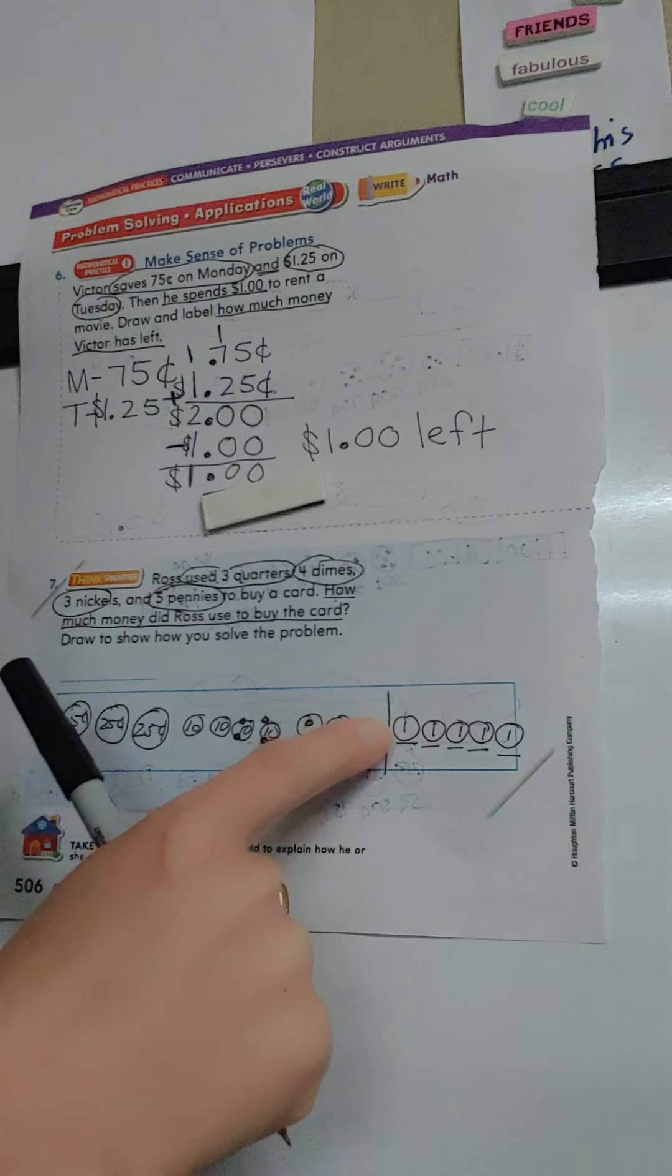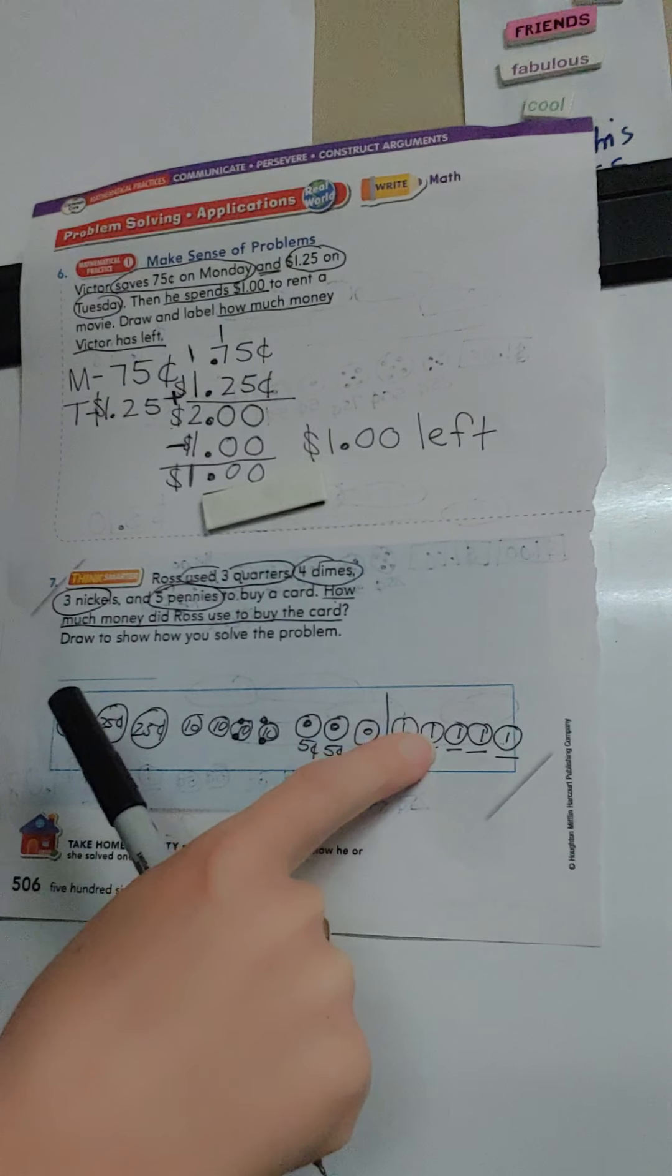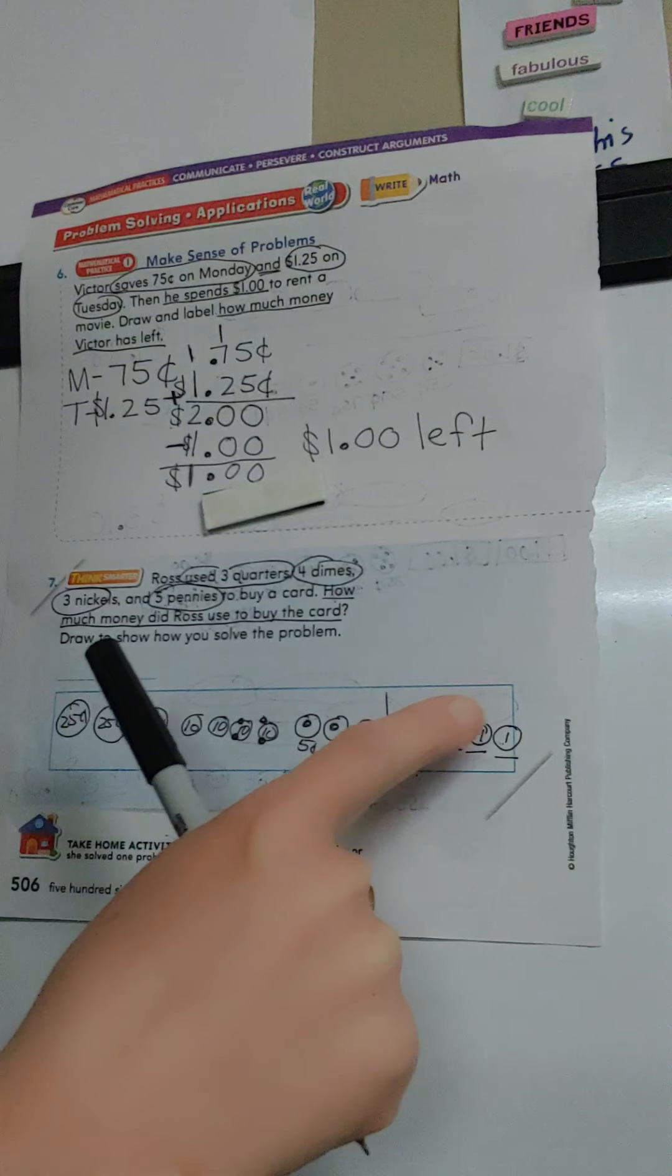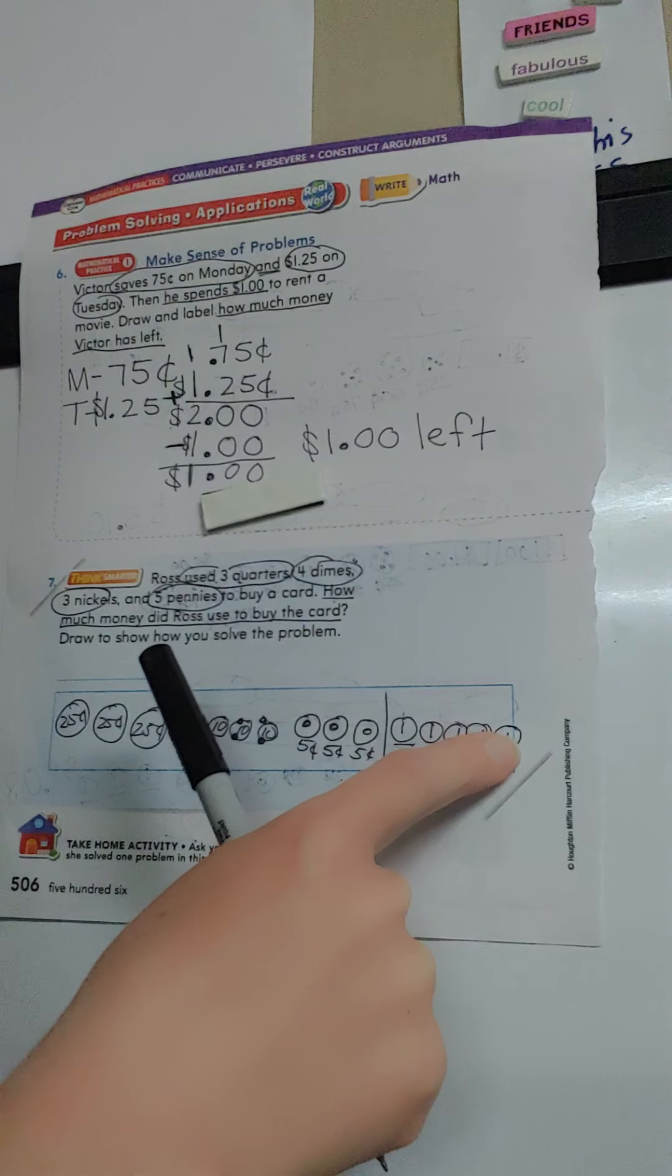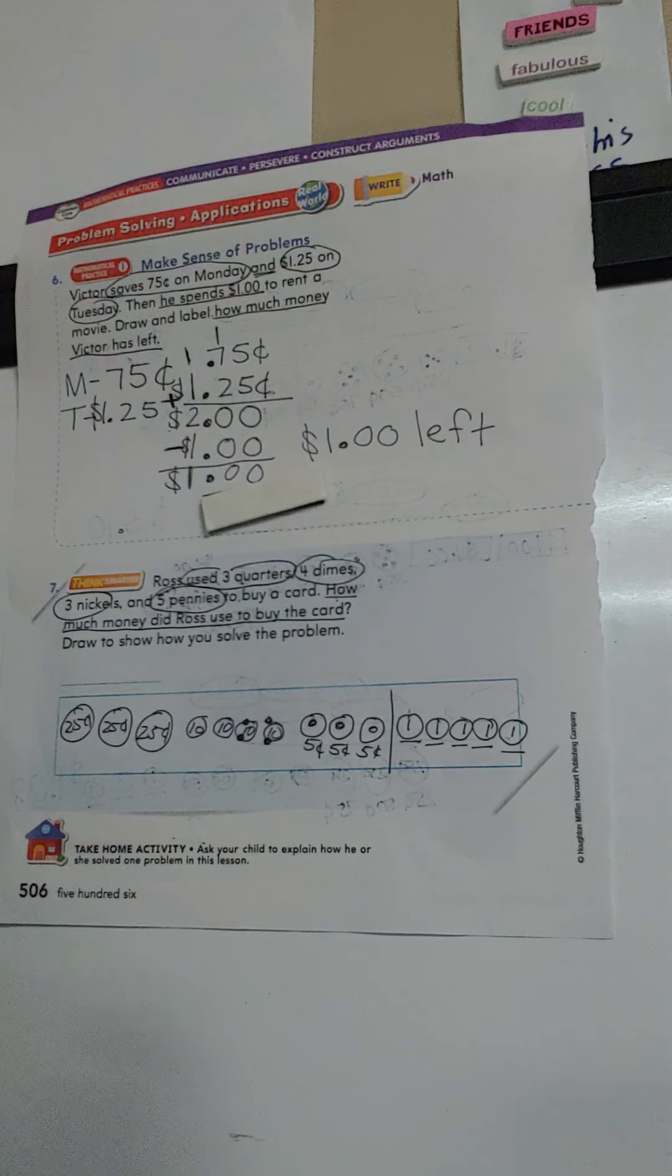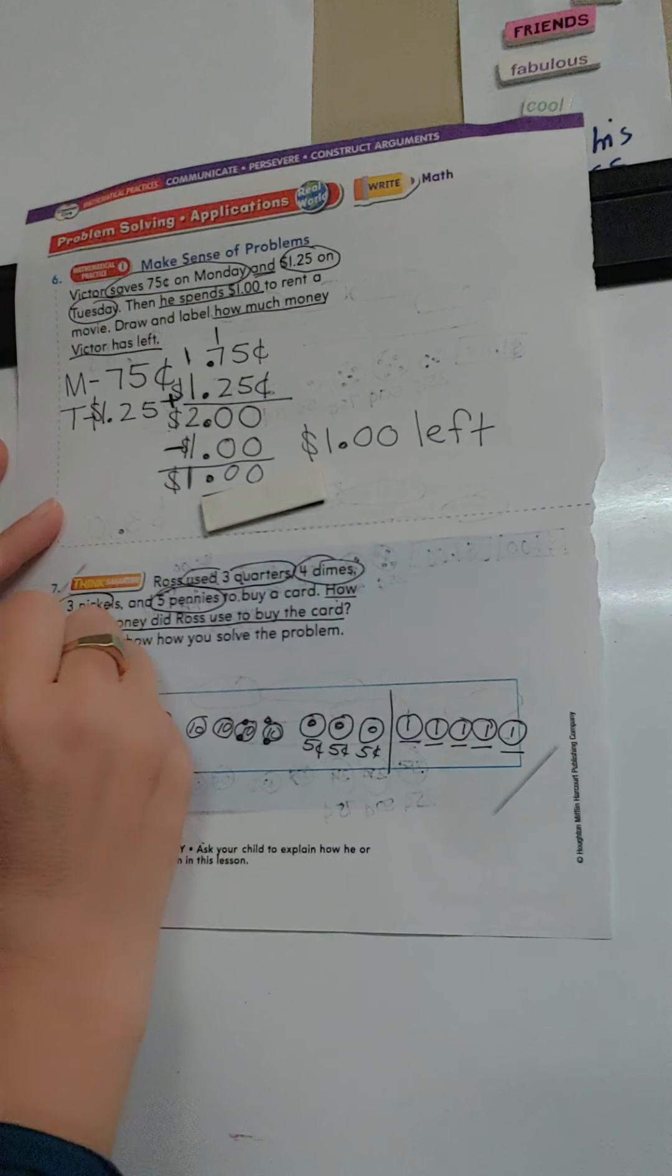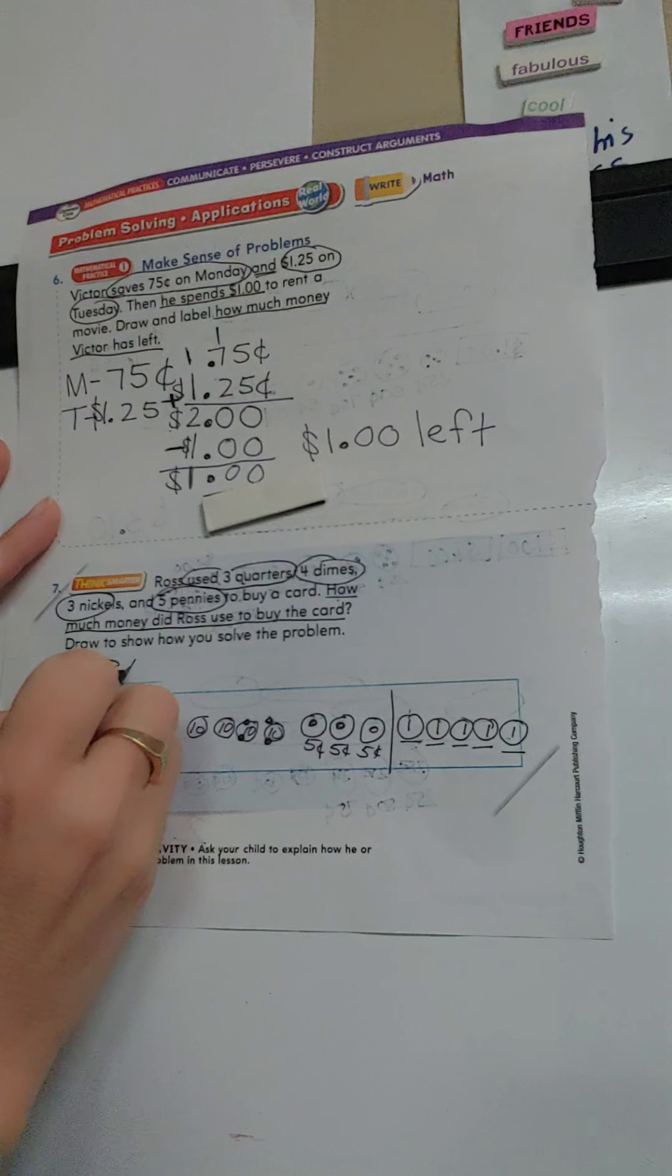Now ones. So $1.31, $1.32, $1.33, $1.34, $1.35. How much money did Ross use to buy the card? $1.35.